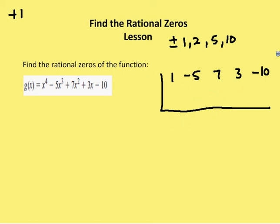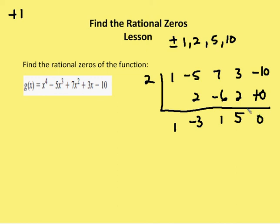Let's try positive two. I have coefficients one, negative three, one, and five from the current setup. Two times one is two. I have negative three here. Two times negative three gives me... let me work through: one, two, bring down and multiply. The result gives me a zero at the end. So positive two works. I have a factor of x minus two, and my reduced polynomial has coefficients one, negative three, one, and five — representing x cubed minus three x squared plus x plus five.